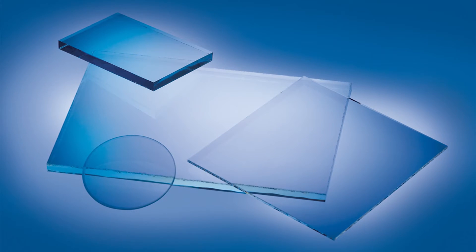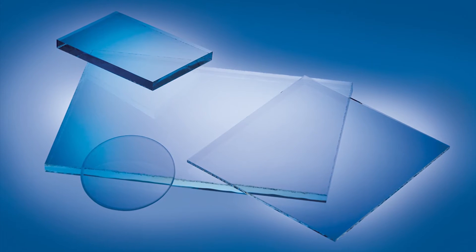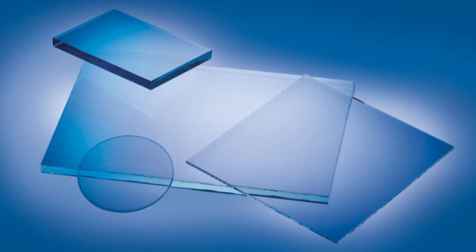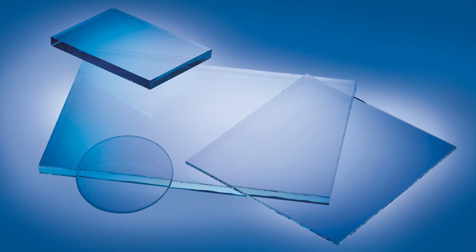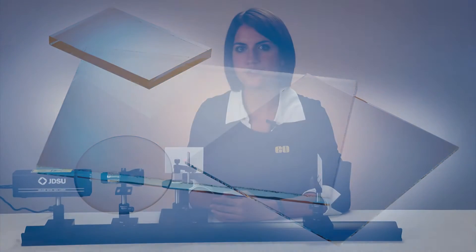We offer several different types of beam splitters: plate, cube, pellicle, and polka dot beam splitters. A plate beam splitter is a common type of beam splitter that is composed of a thin glass substrate with an optical coating optimized for a 45 degree angle of incidence.